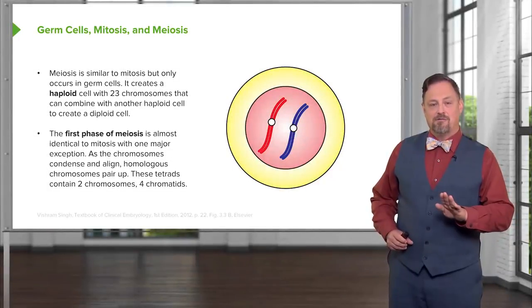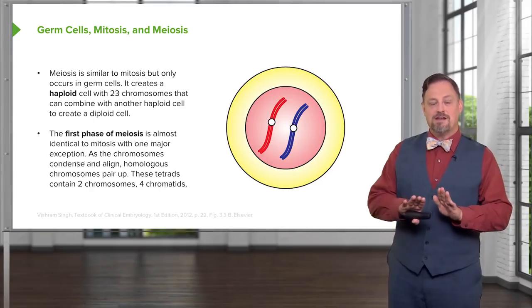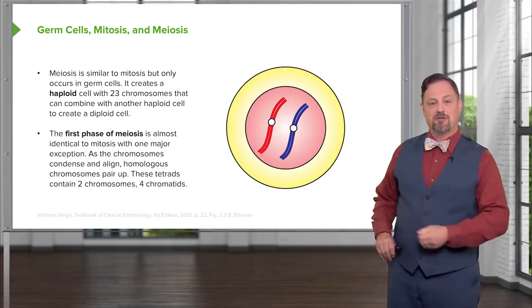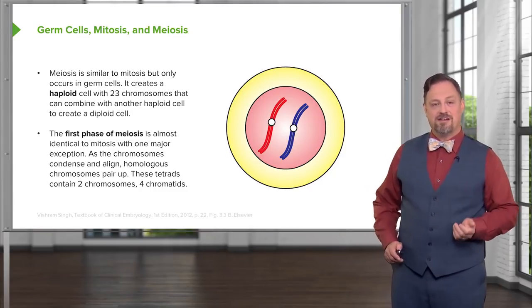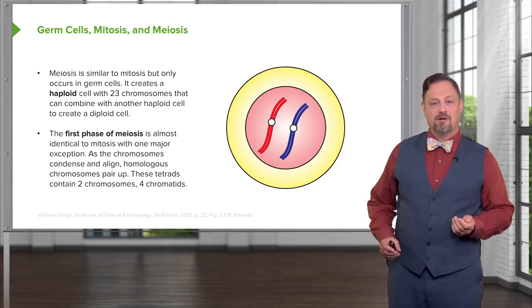However, chromosome 5 will line up right next to the other chromosome 5 and chromosome 18 right next to the other chromosome 18. They're going to associate so that they can actually trade genetic material.